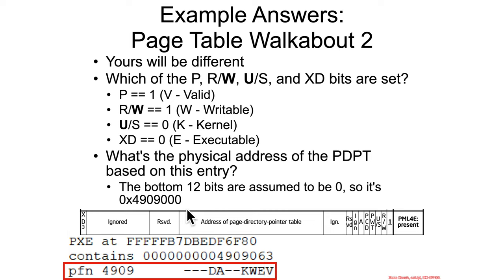So that's how you would interpret this page map level 4 entry. There's also this PFN, page frame number 4909, and that is a different sort of Windows data structure that can talk about how that particular physical frame is used. You would learn more about that in the future Windows Operating Systems Internals class.